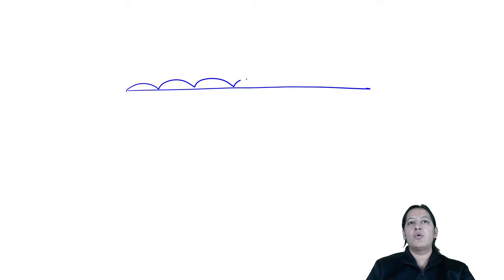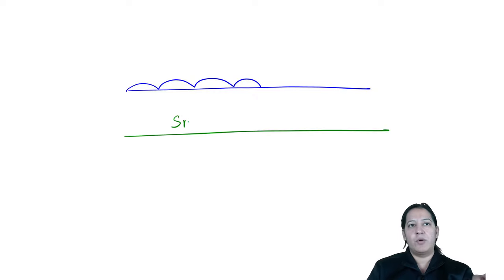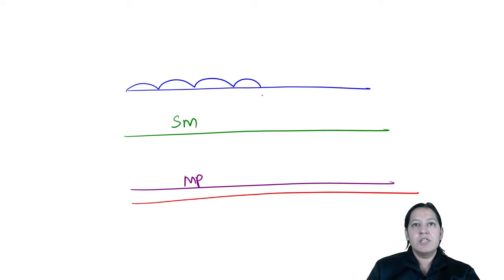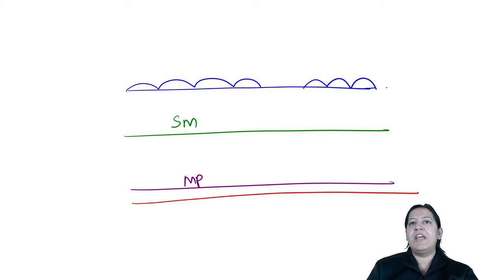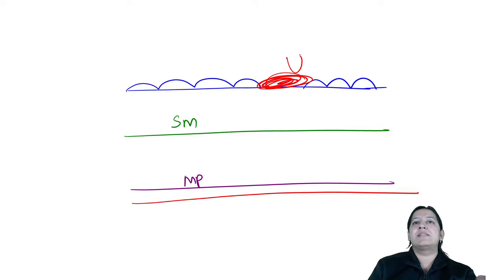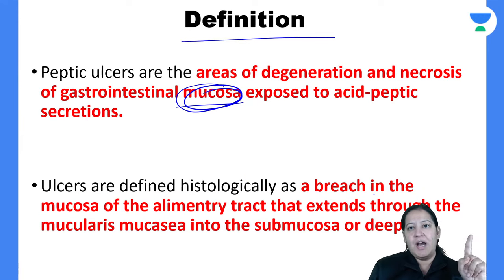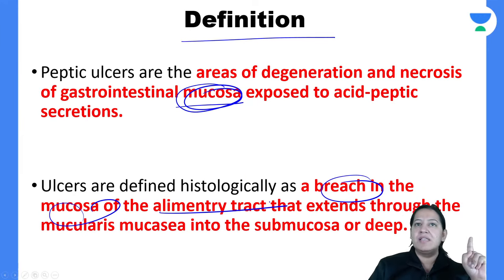You can see these are the four layers of the GIT. This is mucosa. Just below the mucosa there is submucosa. Just below the submucosa, this is muscularis propria and this is adventitia or serosa — the outermost layer. So can you see a breach in the mucosa? By breach I mean the discontinuation. A breach in the mucosa is known as ulcer — that is the definition. A breach in the mucosa of the alimentary canal is known as ulcer.